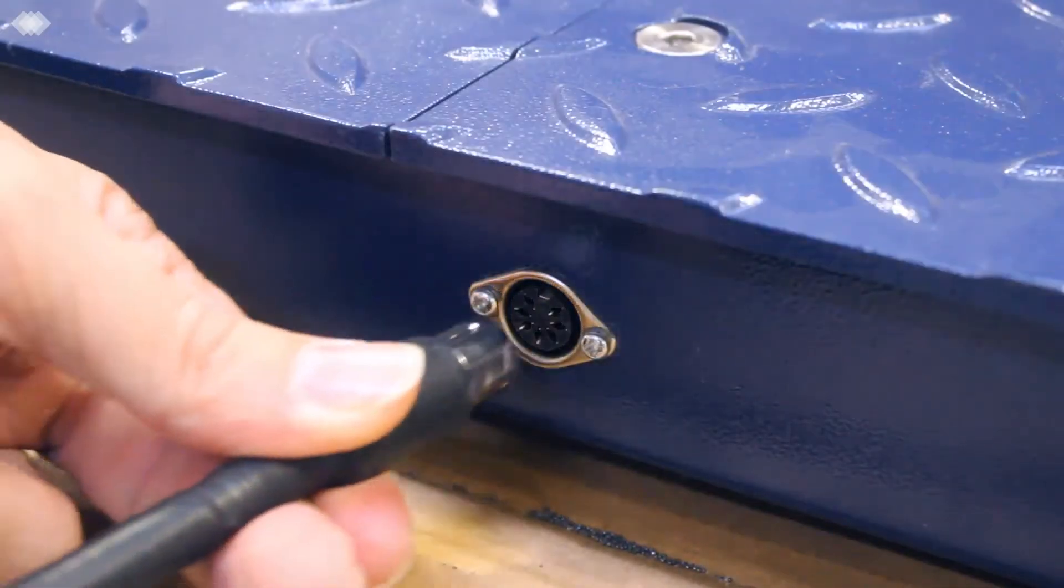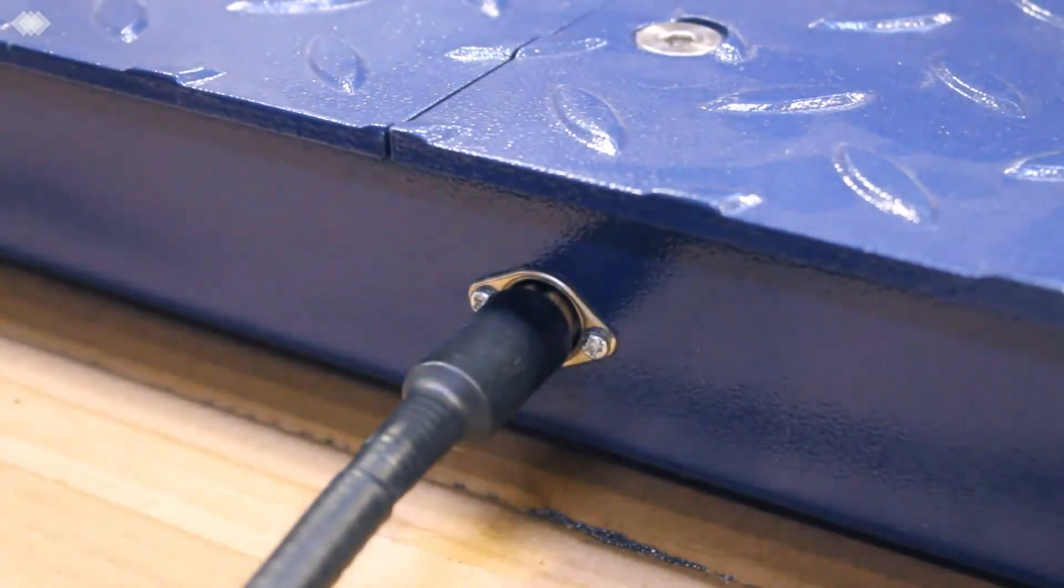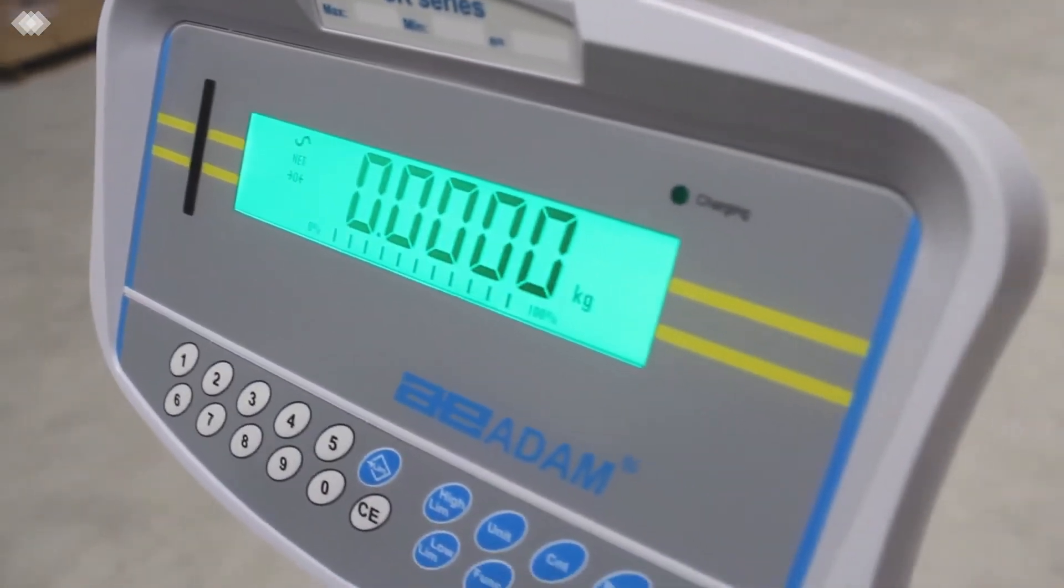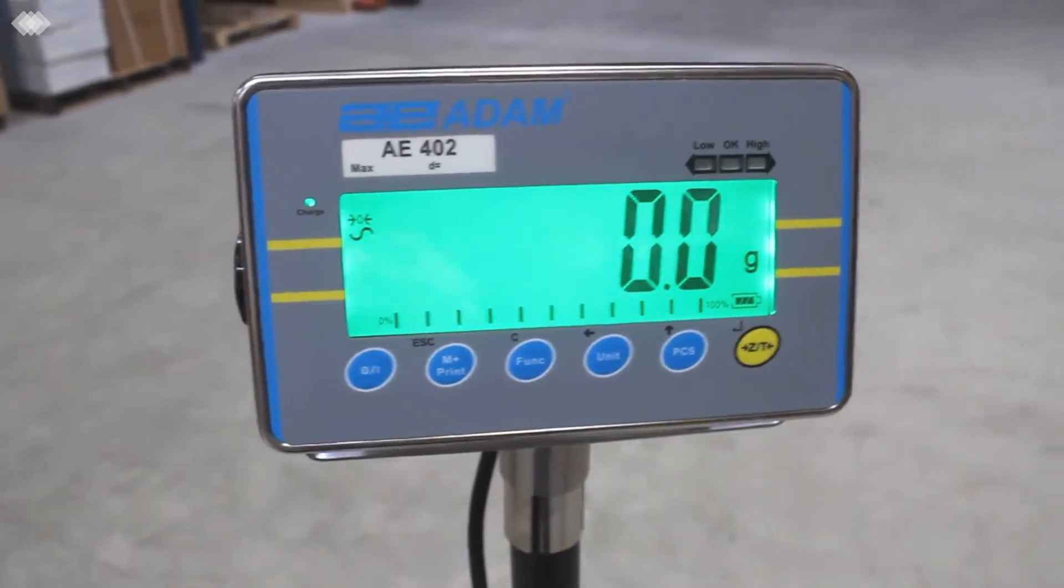The PT comes with a 10-foot-long shielded cable and is compatible with a variety of indicators, including Atom Equipment's GK or AE402 indicators.